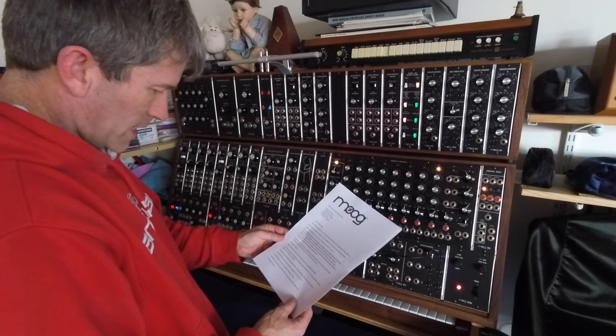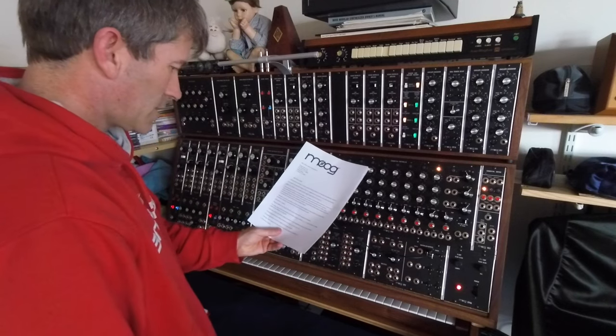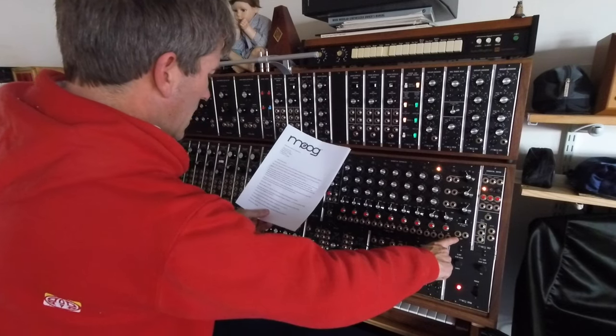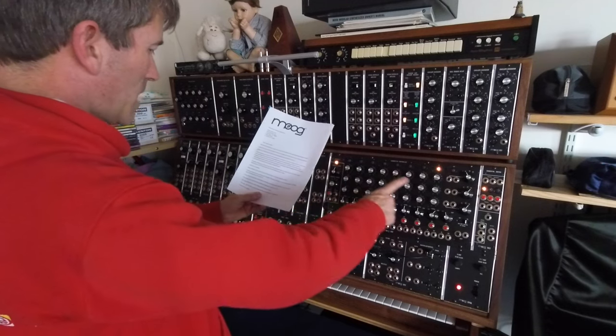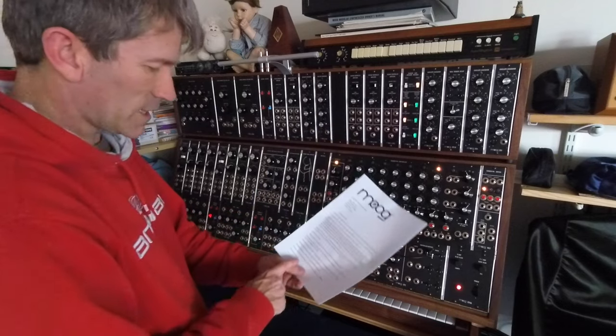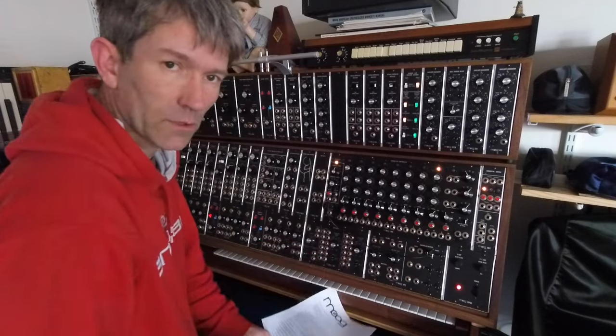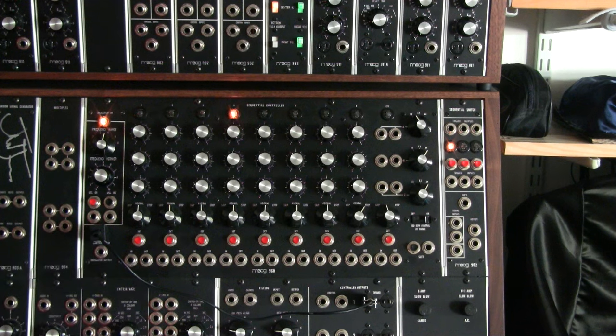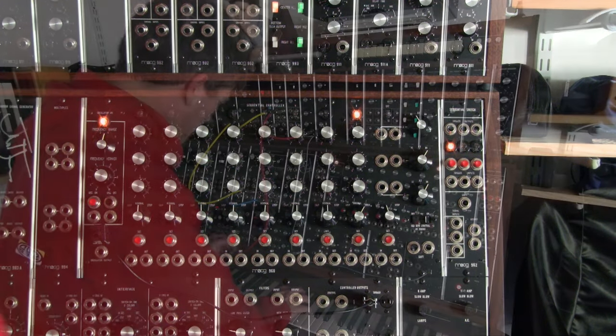Now then, press any of the red buttons along the bottom of the sequential controller, that's these, to load a setting. Pressing the shift button, which is there, will allow another eight settings, i.e. 1 to 8 or 9 to 16. The lights will flash from left to right as the program loads. Pressing the ninth button will clear the previous settings. So that's the ninth button for clearing it. So let's go, let's press this one. A little bit noisy that, but then all the switches were flicking about. Let's see what happens.